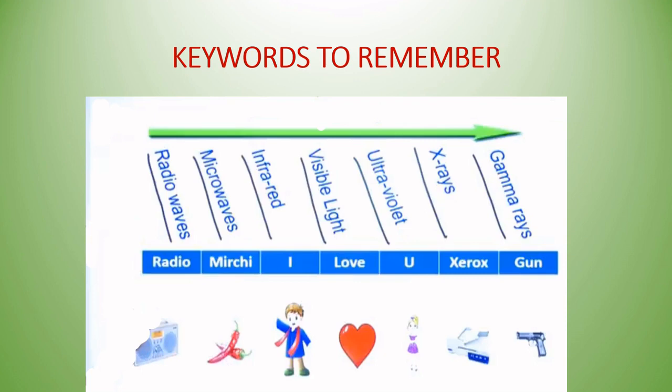A mnemonic to remember the order: 'Radio Mirchi I Love You Xerox Gun' — R for radio waves, M for microwaves, I for infrared, L for visible light (love/light), U for ultraviolet, X for X-rays, G for gamma rays.